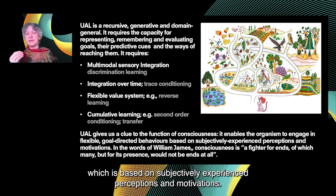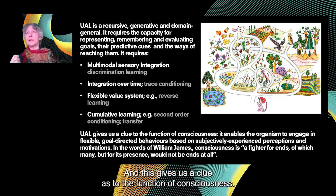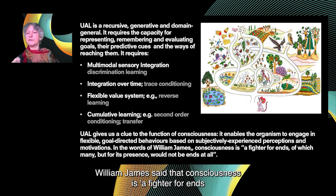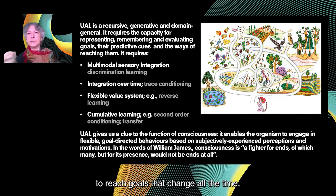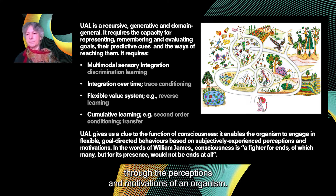This gives us a clue as to the function of consciousness. William James said that consciousness is a fighter for ends, of which many — but for its presence — would not be ends at all. So the function of consciousness is to be able to reach goals that change all the time, and the goals are evaluated through the perceptions and motivations of an organism, its internal states, as they interact and map its own actions and the external world.